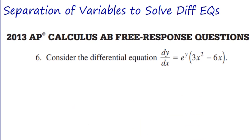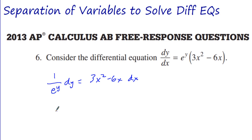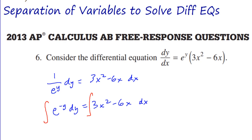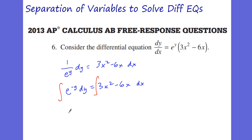Let me show you one more separation of variables. Here is the 2013 AP Calculus exam. Consider this differential equation: dy/dx equals e^y times (3x² - 6x). I want to separate my variables — get my e^y on one side with my dy. So I have e^(-y) dy equals (3x² - 6x) dx, which means I am primed and ready to integrate. The integral of e^(-y) is negative e^(-y). The integral of 3x² - 6x is x³ - 3x² + C.